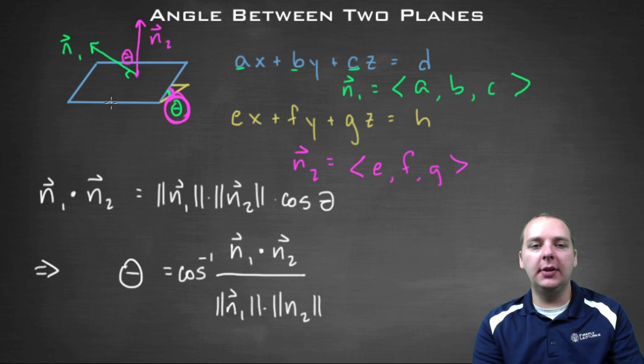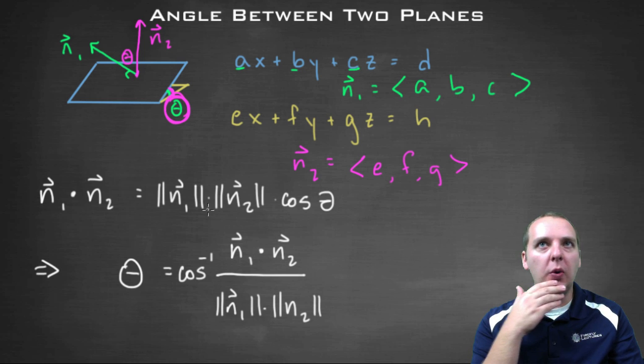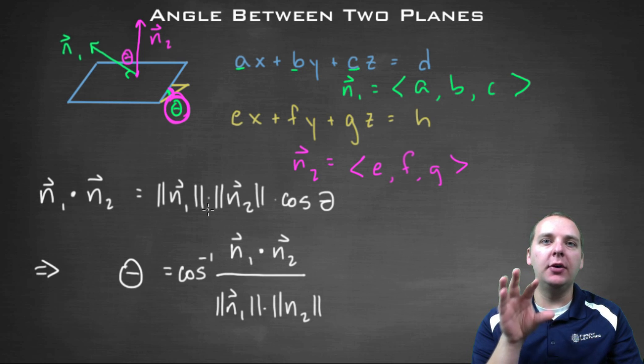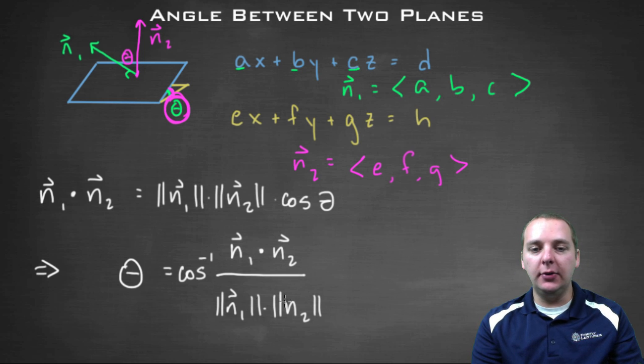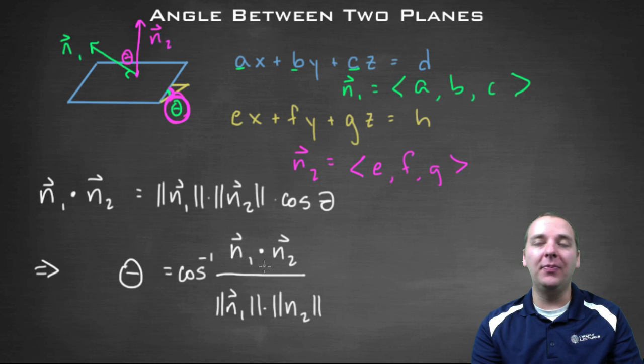And so how do we make sure that this angle will be only zero to 90? Well we would want to keep the cosine values, the angle, in the first quadrant. In the first quadrant, cosine is always positive. Now the magnitudes are always positive, but a dot product could be negative. And if the dot product is negative, then the arc cosine of that will give you an angle in the second quadrant, but that's an obtuse angle, we want an acute angle.